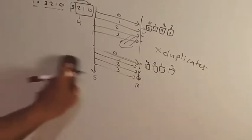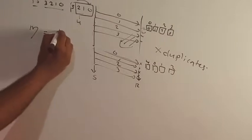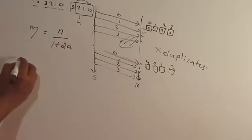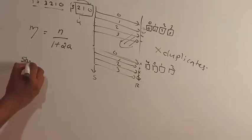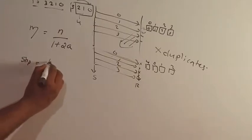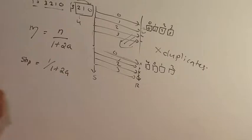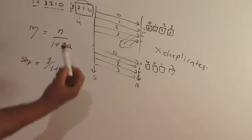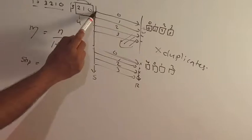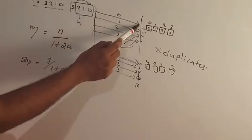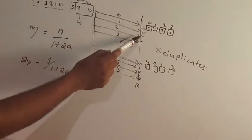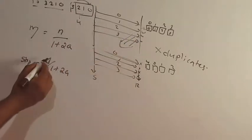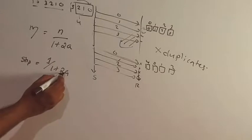This is the efficiency calculation. The efficiency calculation is n divided by 1 plus 2a. Stop and wait protocol is 1 divided by 1 plus 2a. Stop and wait protocol's efficiency calculation is 1 divided by 1 plus 2a.